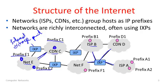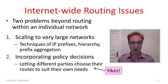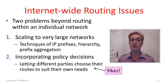Our routing problem is that even though these are all different networks run by different people with different ideas of what routes they'd like to choose, we want to be able to find routes from a source — say a CDN sending traffic — to reach a particular destination such as a customer within an ISP. What I want to discuss first are the issues introduced by this internet-wide view of routing across multiple parties.